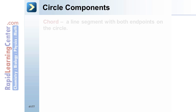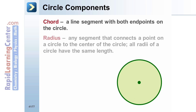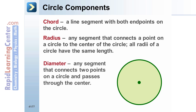Circle components: a chord is a line segment with both endpoints on the circle. A radius is any segment that connects a point on a circle to the center of the circle, and all radii of a circle have the same length. A diameter is any chord that passes through the center of a circle, and the length of a diameter is twice the length of a radius.